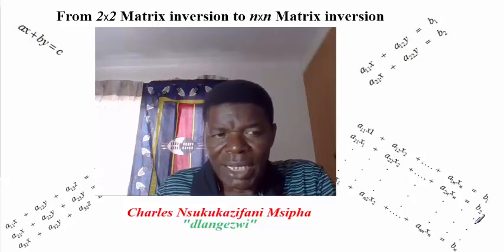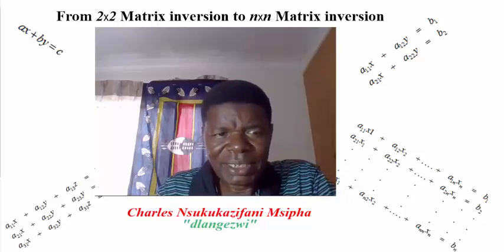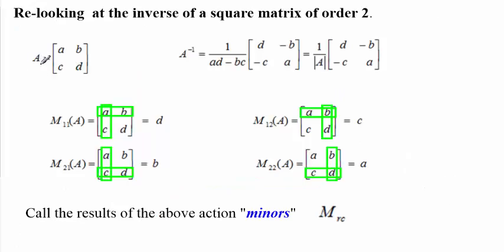Starting with the 2 by 2, let's look at the following matrix. We started with a general matrix of 2 by 2 with entries a, b, c, d, and we worked out using systems of simultaneous linear equations that the inverse would look like this. We noticed that the denominator here is what we call the determinant. So, in short, if you're given A like this, the inverse is 1 over the determinant multiplied by this kind of matrix.